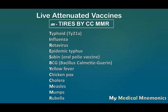C-C: the first C is for chickenpox and the second C is for cholera. Then MMR stands for measles, mumps, and rubella. So this sentence — TIRES BY C2MMR — is going to tell you the names of all the live attenuated vaccines.